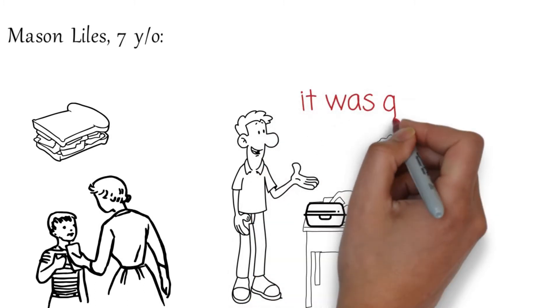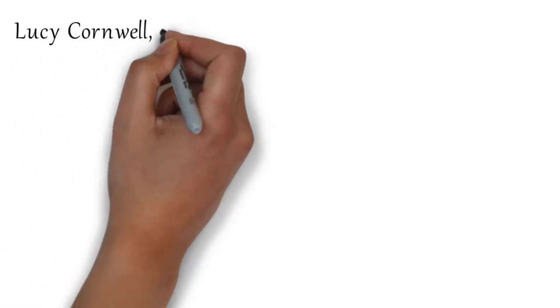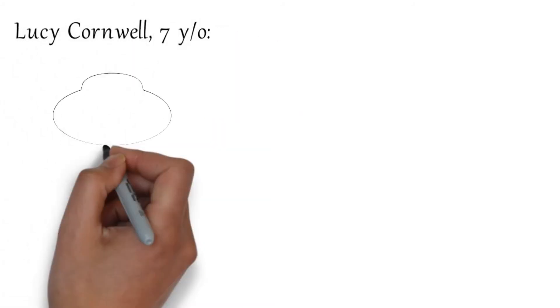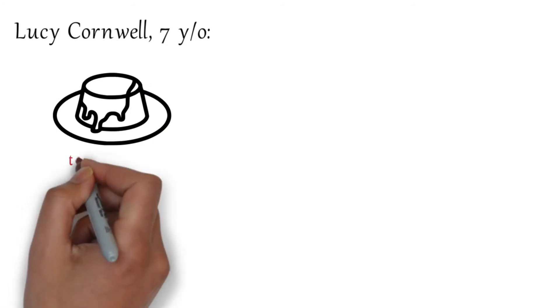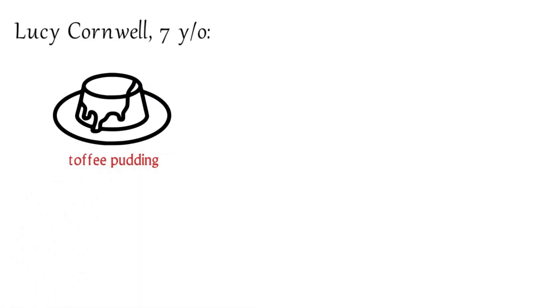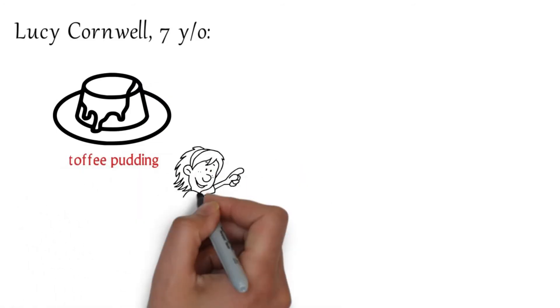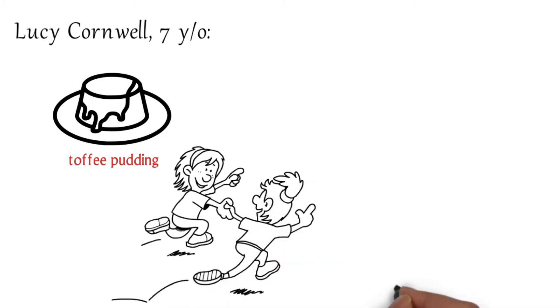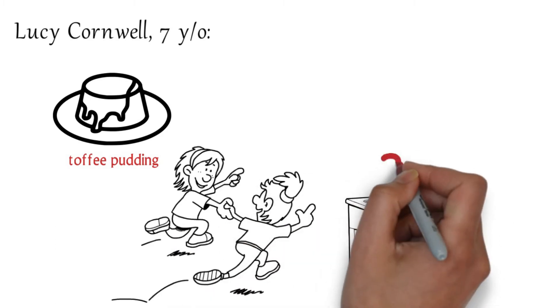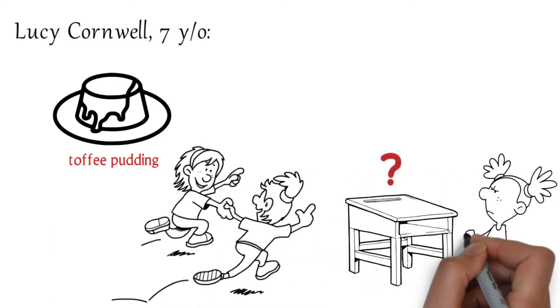Lucy Cornwell, 7 years old: My mom made me toffee pudding to share with my friends for my birthday. I left them on my desk while I went outside to play and once I returned all of my toffee pudding was gone. I thought it was one of the boys in my class but no one fessed up.